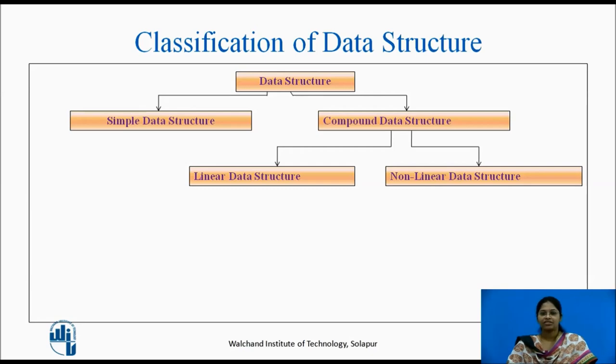A linear data structure can be constructed as a continuous arrangement of data elements in the memory. In the linear data structure, the relationship of adjacency is maintained between the data elements. It can be classified as arrays, stacks, queues and linked list.